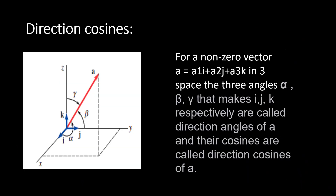Now we're going to go over direction cosines. For a non-zero vector A = a1î + a2ĵ + a3k̂ in three-space, the angles alpha, beta, and gamma that the vector makes with the i, j, and k axes are called the direction angles. So alpha makes an angle with î, beta with ĵ, and gamma with k̂ — these are called the direction angles.